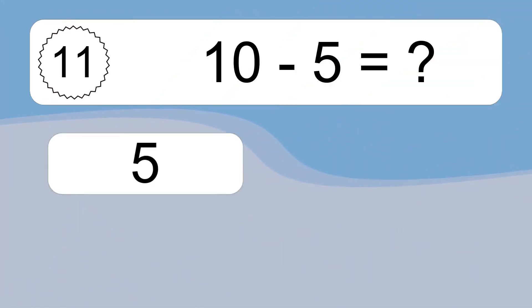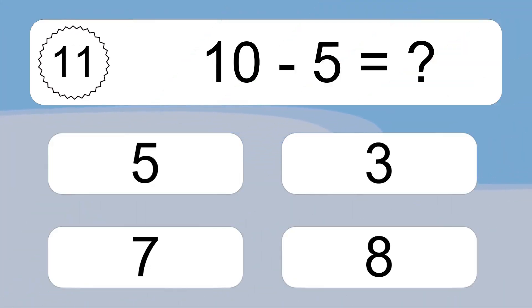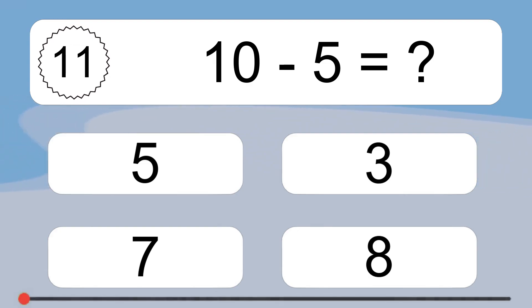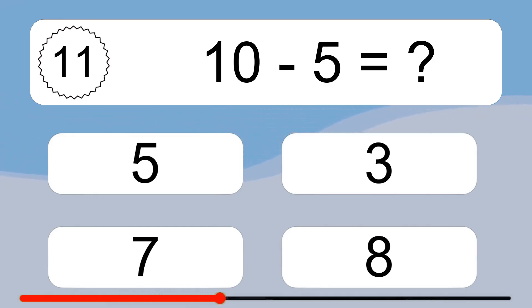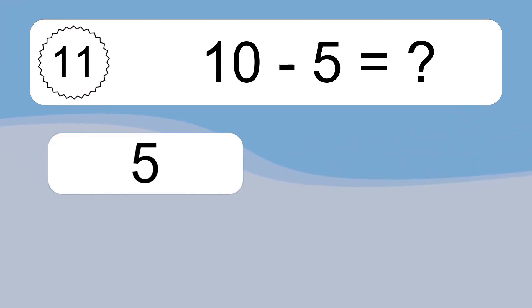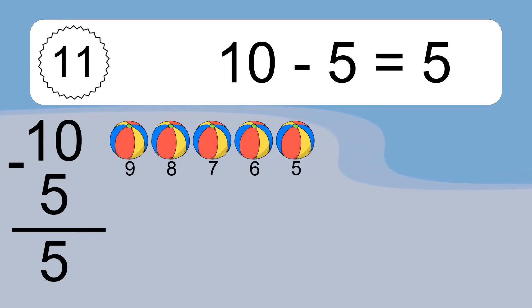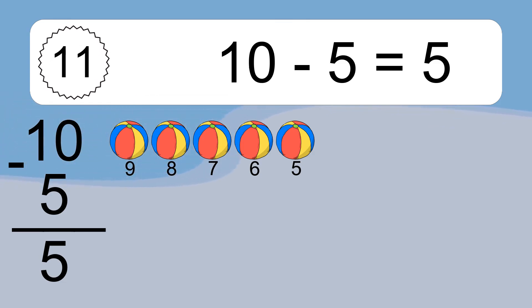10 minus 5 equals what? 10 minus 5 equals 5. Let's count it: 9, 8, 7, 6, 5.